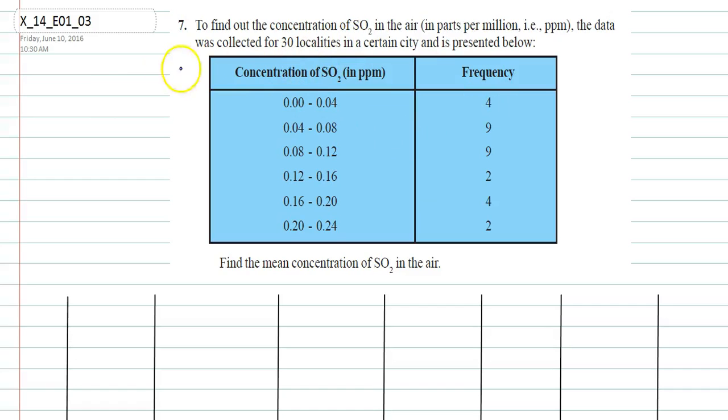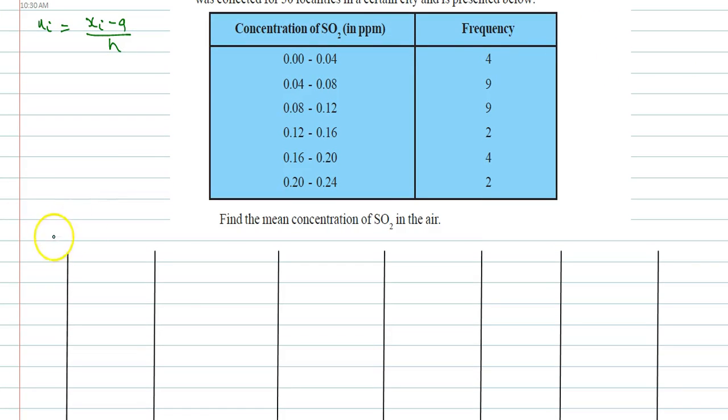We shall solve this question by using the step deviation method. In step deviation method we calculate ui which is xi minus a by h. So let's write the first column to be concentration of SO2 in ppm.